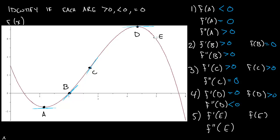And then e: e is still above the x-axis, so f of e is greater than 0. The slope of the tangent line here is now negative, so f prime of e is less than 0. And f double prime of e — it's still in the concave down section of the graph, so this is less than 0. So again, just take it step by step: f is asking you about the height — is it positive or negative; f prime is asking you about the slope of the tangent line; and f double prime is asking you about the concavity. And again, that's assuming we're looking at f of x.